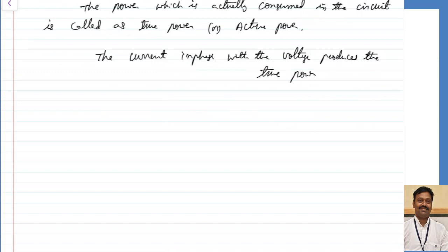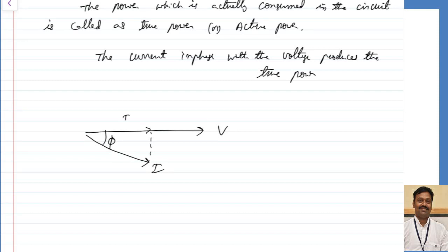If you take the current — say this is my voltage and this is my current lagging by some angle phi — the in-phase component is because of the resistor. In a resistance, the current and voltage are always in phase with each other. Voltage across the resistor and current through the resistor are in phase. This is called the in-phase component or active component of the current, which is responsible for the active power loss in the circuit.